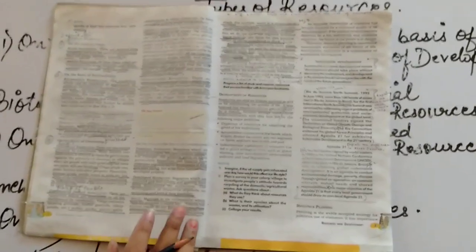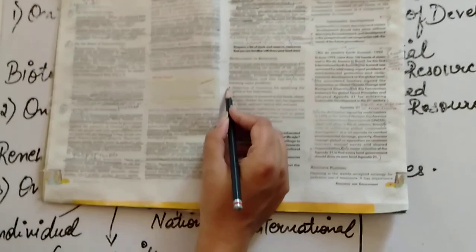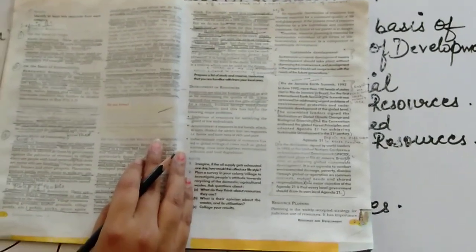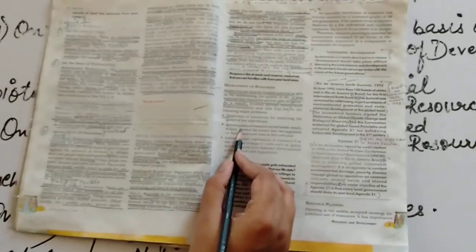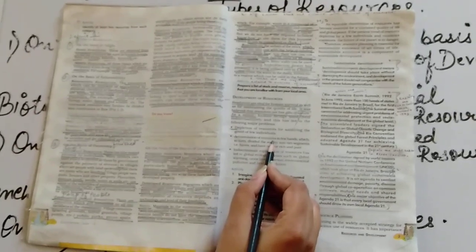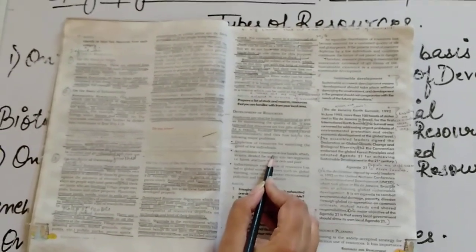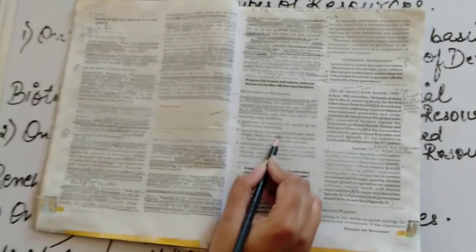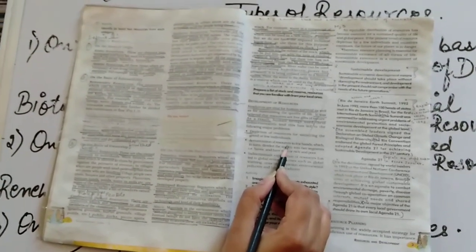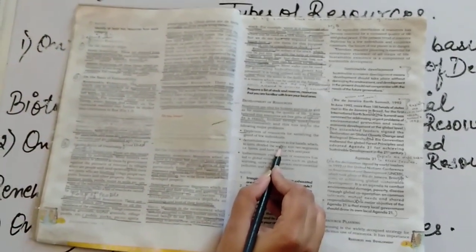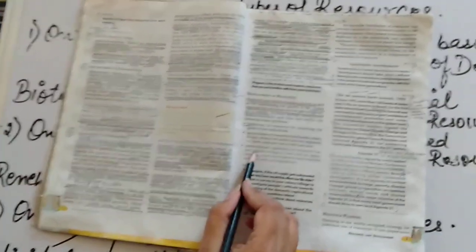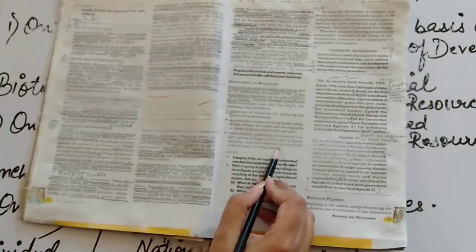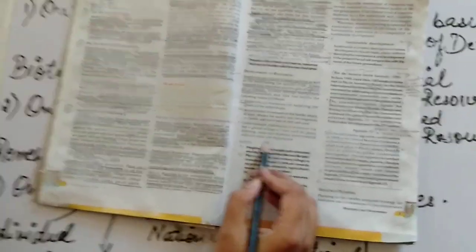There are number of problems we had started facing with the resources. Those are resources are depleting. Resources dheere dheere karke khatam ho raha hai. Secondly, we can say that resources have accumulated in few hands only like rich and poor people are not able to get the benefit of the same. Thirdly, we can say that the reckless and the overuse of resources are creating environmental pollution and the land degradation.